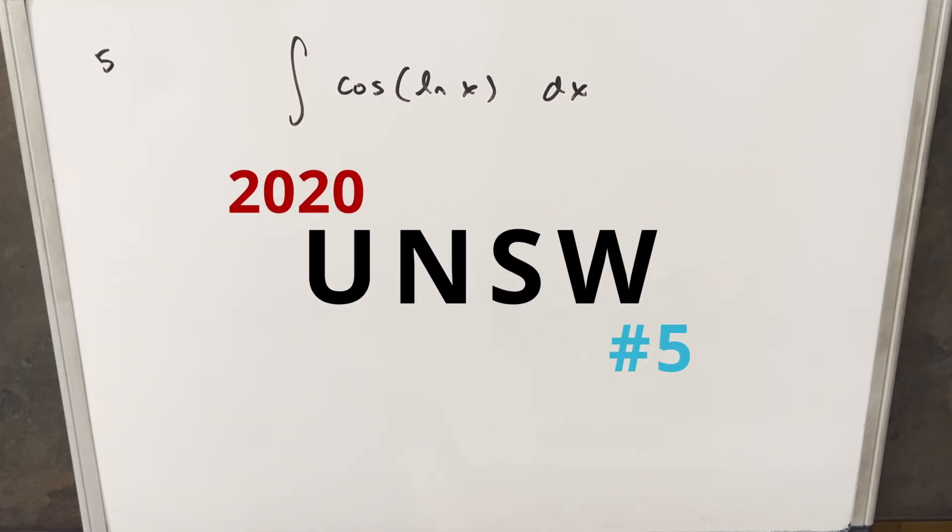We have here today an interesting integral from the UNSW integration B from 2020. This is problem five. We have the integral of cosine ln x dx.